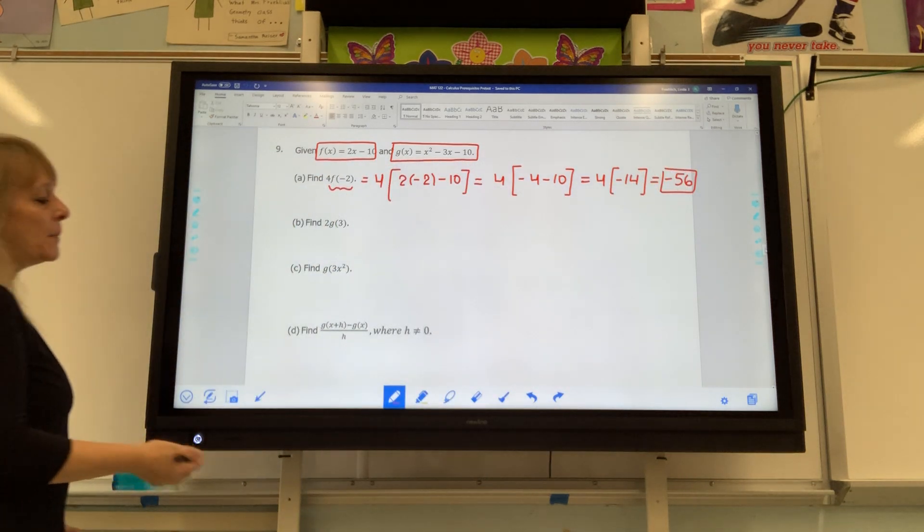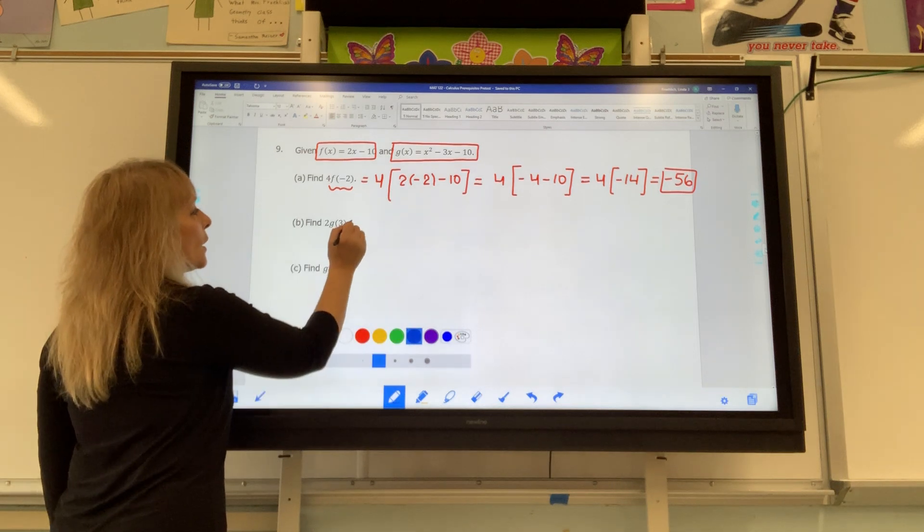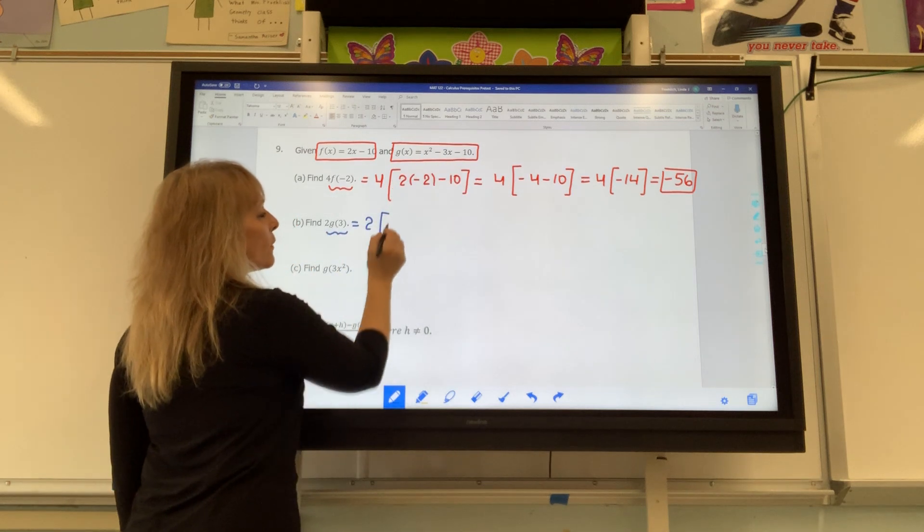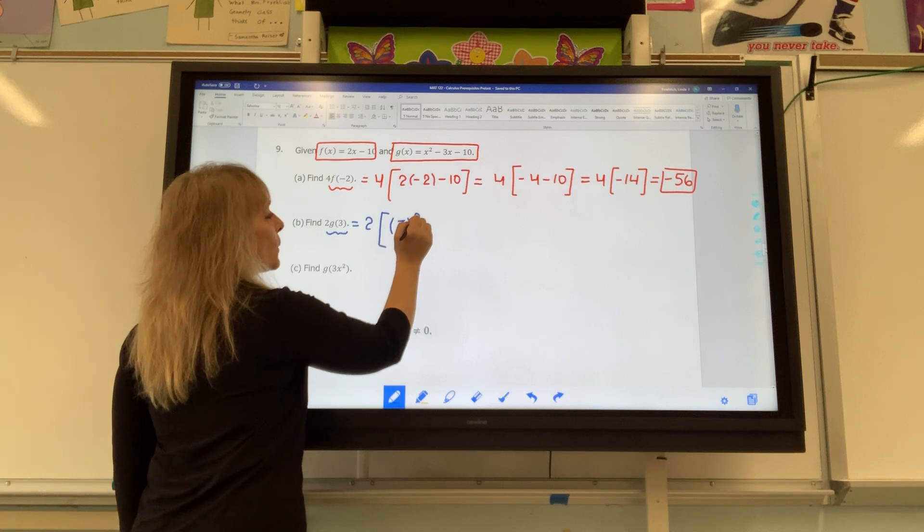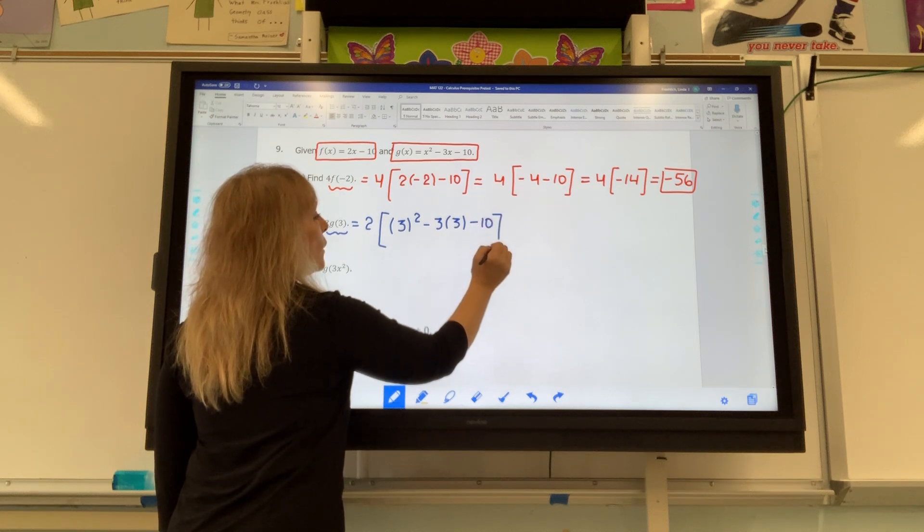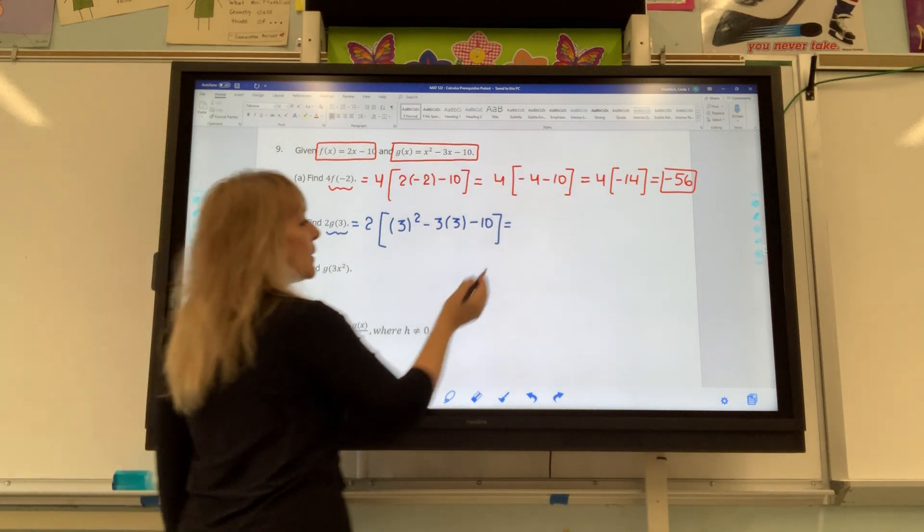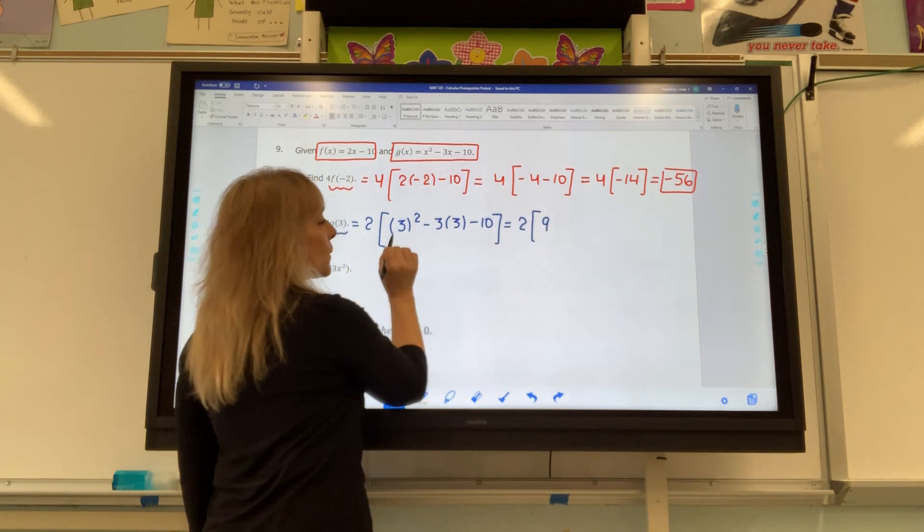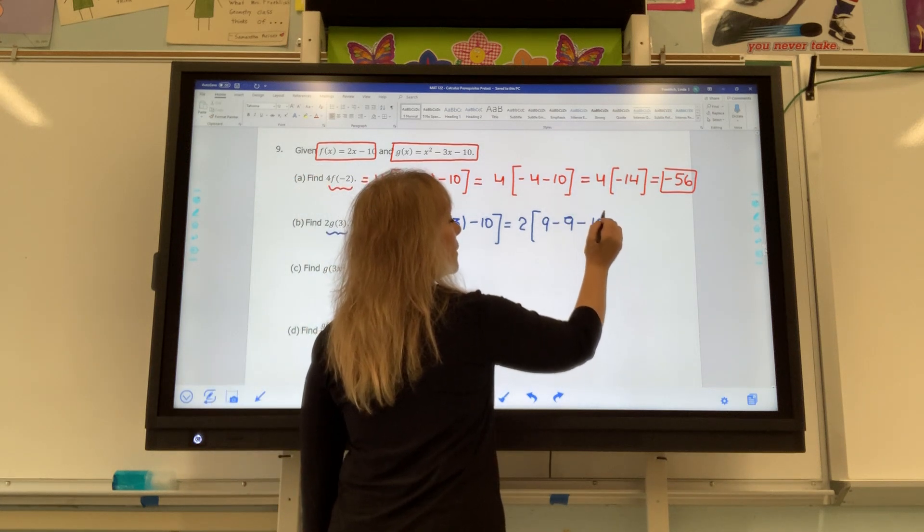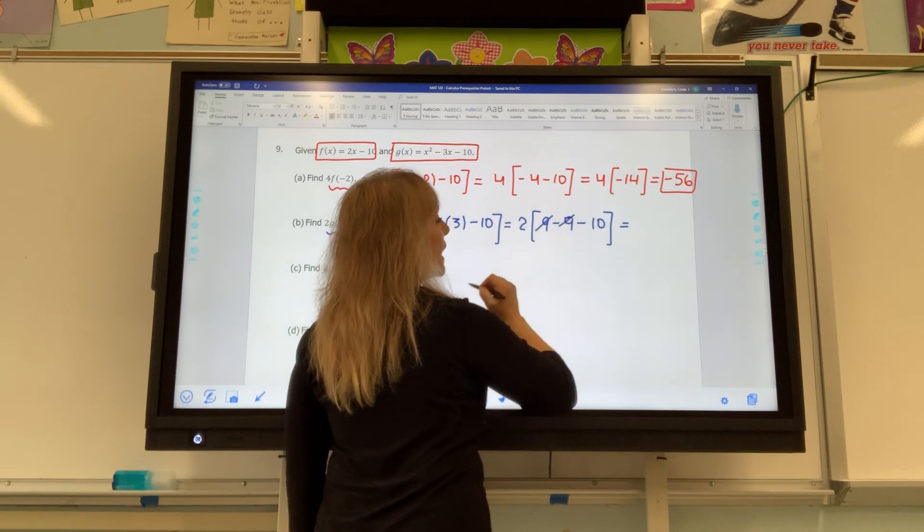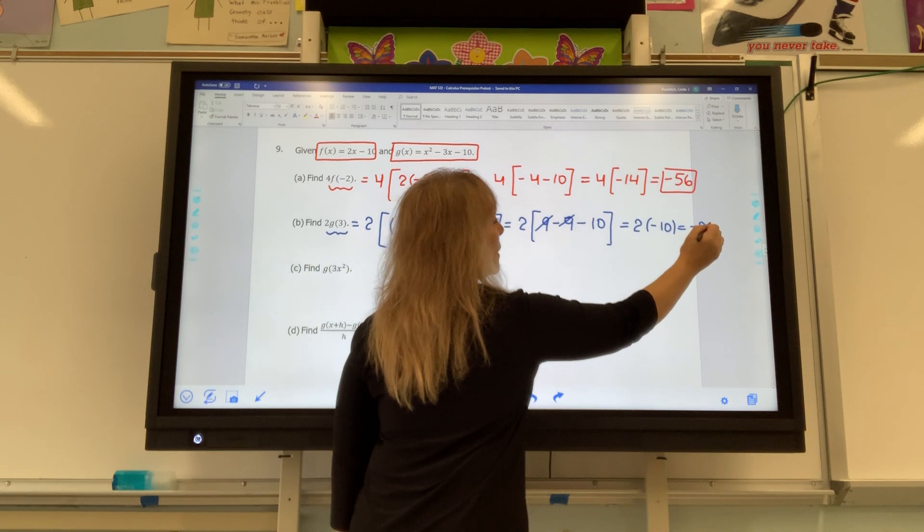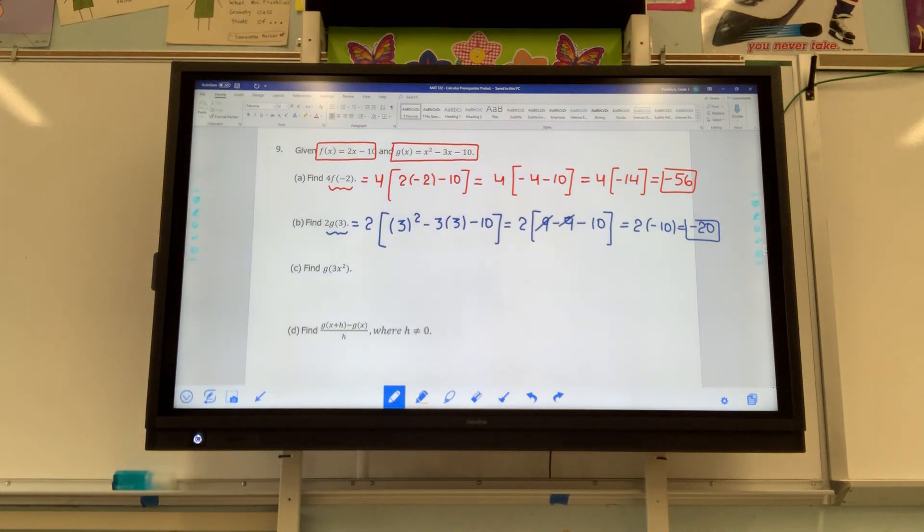For the second example, same concept, but you're going to put the coefficient in front and then plug in the number 3 for all the x's on the right-hand side of g. So it's 3 squared minus 3 times 3 minus 10. Inside those brackets, it is 2 times 3 squared is 9, negative 3 times 3 is negative 9 minus 10. The negative 9s cancel and you're left with 2 times negative 10, which is negative 20.